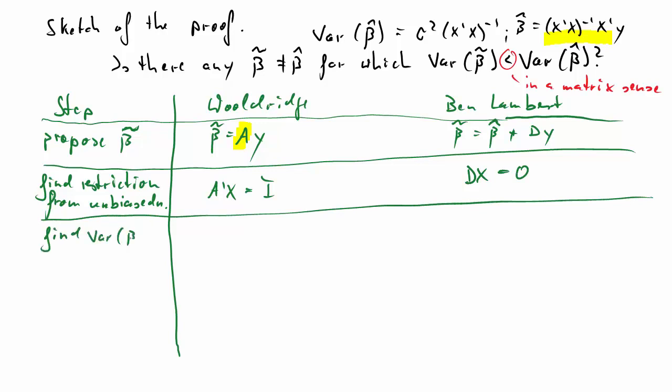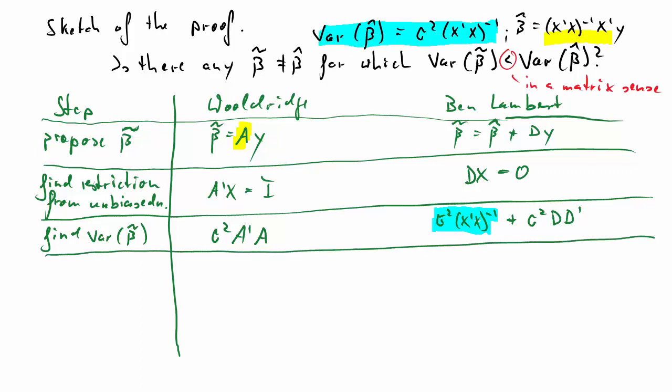Next step, we want to find the variance of beta tilde. In Wooldridge, we find that to be sigma squared times a prime a. Ben Lambert finds this to be sigma squared x'x inverse plus sigma squared d times d prime. Now, it's useful to compare this to our variance of the OLS-estimator. That first part in the Ben Lambert proof is, of course, just the same as the variance of beta hat.